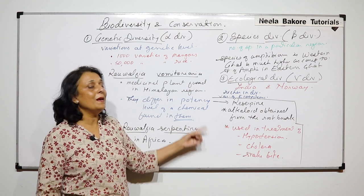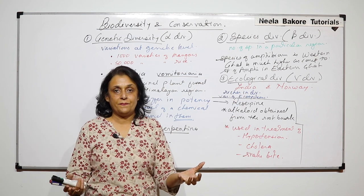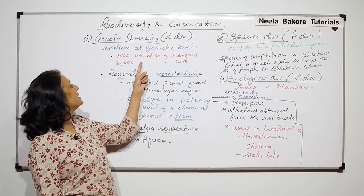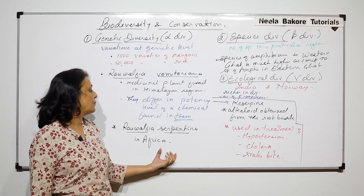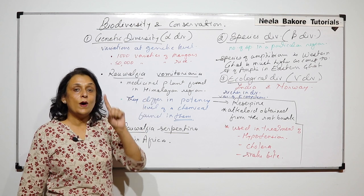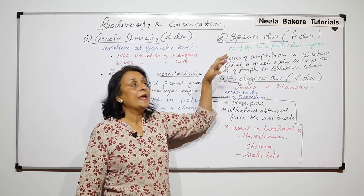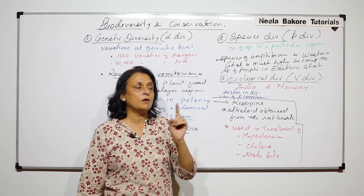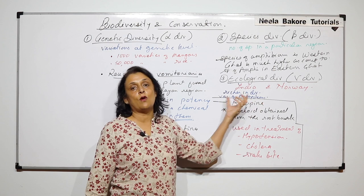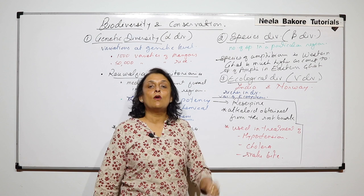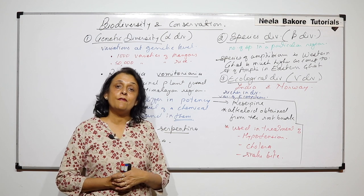To sum it up, there are three main levels at which we talk about diversity: gene level, species level, and ecosystem level. At the gene level, important examples are the varieties of rice and mango in India, plus Ravolfia vomitoria and Ravolfia serpentina in Africa — in one species there is variation in the genetic makeup. In species diversity we compare number of species in a particular region. In ecological diversity we look at a bigger area, and more ecosystems means richer diversity — India and Norway are two countries we can compare. In the next part, we will take up the percentage or number of various types of organisms.